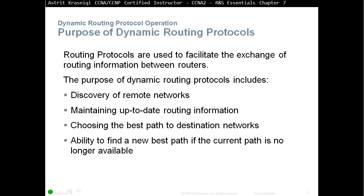One router can hear about a destination from many neighbors — two, three, four or more. The routing protocols have the ability to choose the best path out of these. If the same information is coming from four neighbors, it will pick the best path to get to the destination, and also has the ability to find a new best path if the current path is no longer available.